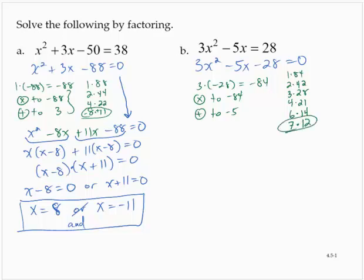7 and 12 is the pair that I want. 7 and 12 have a difference of 5. Now since I need a negative 5, I'll use a positive 7 and a negative 12. So I'll rewrite the equation as 3x squared plus 7x minus 12x minus 28 is 0. So using the grouping technique, I'd have x by 3x plus 7 minus 4 by 3x plus 7.